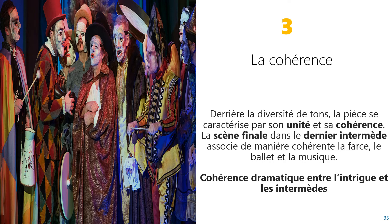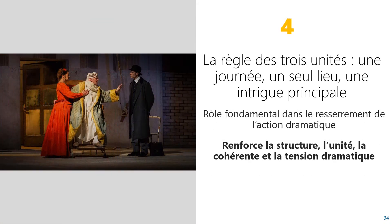Dans le premier intermède, Polichinelle, l'amant de Toinette, est chargé d'avertir Cléante des plans d'Argan pour Angélique, d'où l'apparition de Cléante dans le deuxième acte. Le deuxième intermède est pensé par Bérald pour essayer de calmer la fureur d'Argan. Et le troisième intermède est imaginé par Bérald pour faire croire à Argan qu'il va devenir médecin afin de permettre à Cléante et à Angélique de s'aimer librement. De surcroît, Molière respecte la règle des trois unités. Tout se passe en une seule journée, en un seul lieu — la maison d'Argan — et autour d'un personnage, Argan, et d'une intrigue centrale : Argan qui oblige sa fille Angélique à épouser un médecin pédant. Cette règle des trois unités permet de créer de la cohérence et de renforcer la tension sur scène et l'attention du spectateur.